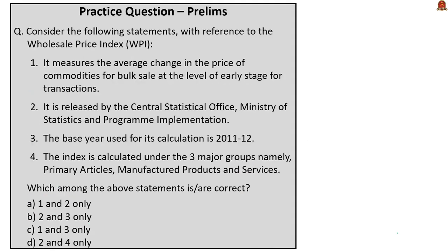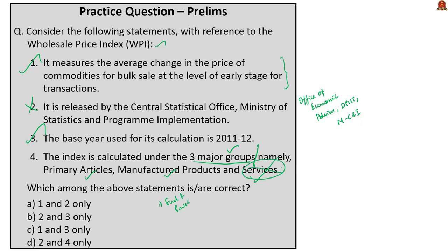Consider the following statements about the Wholesale Price Index. Statement 1 is the definition of WPI and is correct. Statement 2 is wrong: WPI is compiled and released on a monthly basis by the Office of Economic Advisor, not the Central Statistical Office. The Office of Economic Advisor comes under the Department for Promotion of Industry and Internal Trade under the Ministry of Commerce and Industry. Statement 3 is correct: the base year used for calculation is 2011-12. Statement 4 is partly right — WPI is calculated under three major groups: primary articles, manufactured products, and fuel and power — but services are not included. So the correct answer is statements 1 and 3 only.